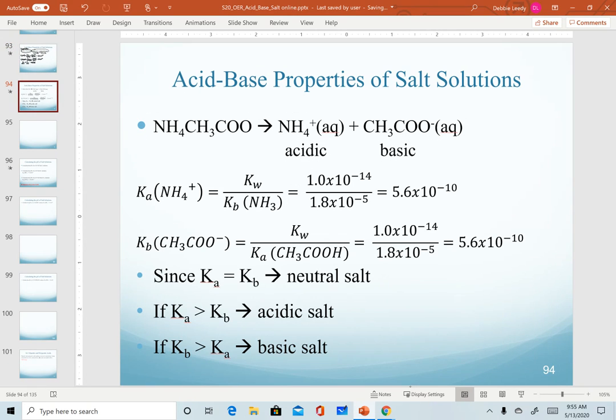So last discussion here. For this salt, we do predict neutral because our K values for the ions are exactly the same. But if I calculated that the Ka of my cation was greater than the Kb value of my anion, then I predict that my salt would be acidic. If my Kb value is larger than my Ka value, that's when I predict a basic salt.